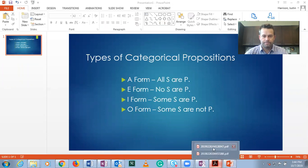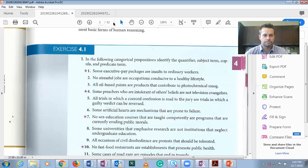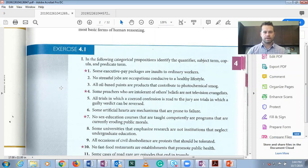Okay so let's go back and work a few of these out. So number one, some executive pay packages are insults to ordinary workers. Alright so the quantifier here is either universal or particular. So remember A and E statements have universal quantifiers all or no. And then I and O statements have particular quantifiers. Some and some are not. So here's some is a particular quantifier and the quantifier itself is some. The subject term is what comes before the copula or is the subject term the subject of the statement. So executive pay packages is the subject term.